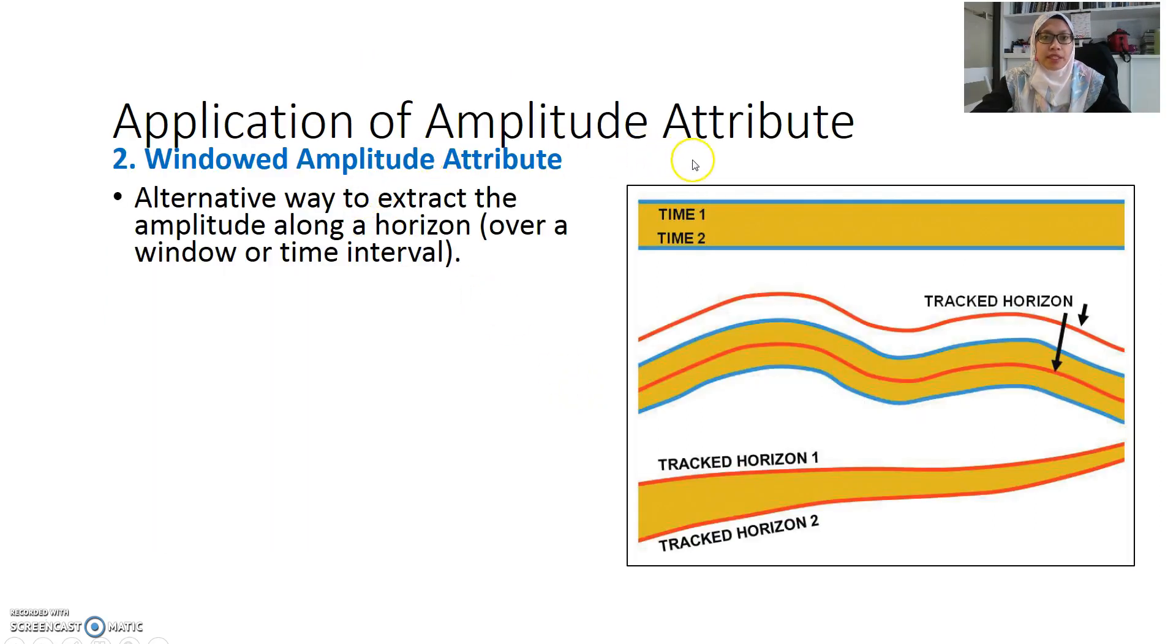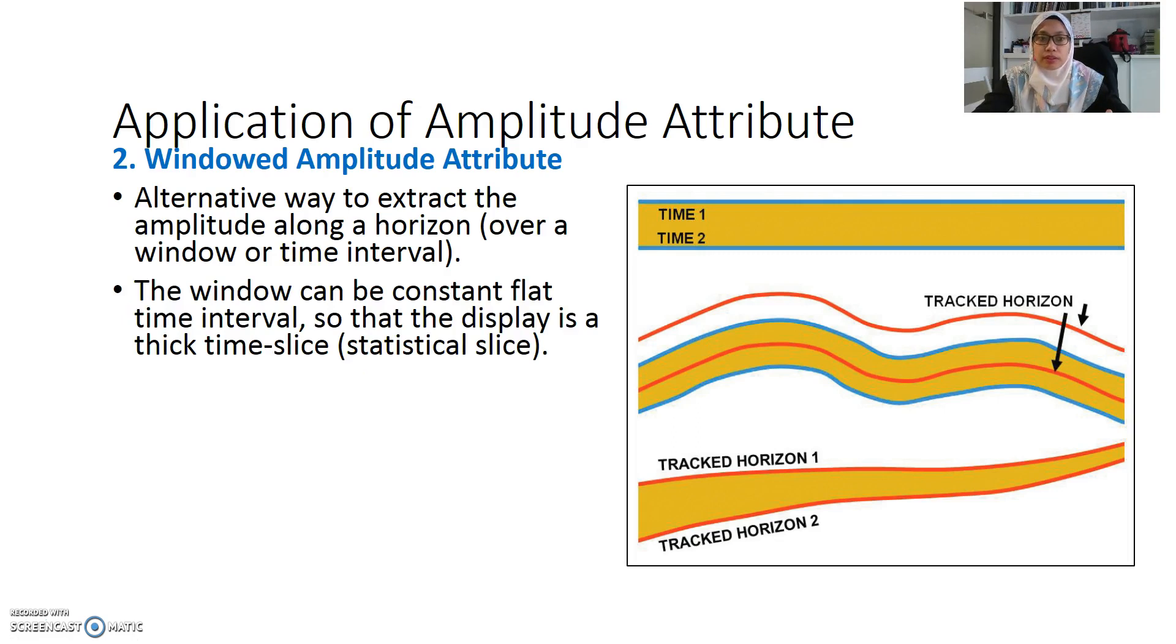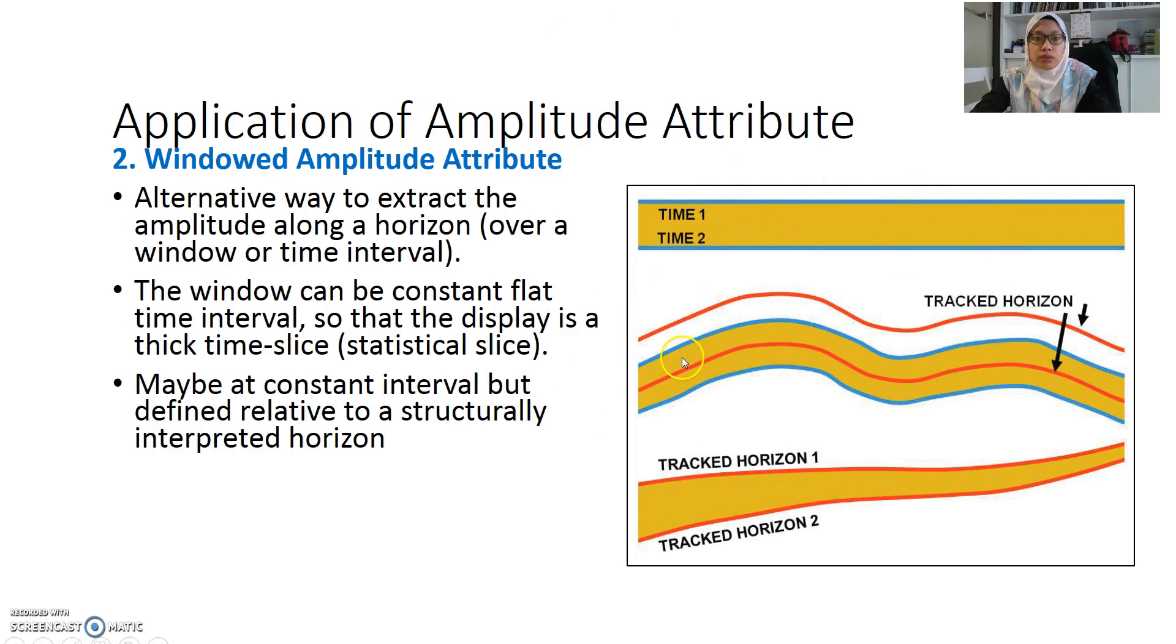Application of amplitude attribute based on window amplitude attributes where you have two times or two tracked horizons. This is an alternative way to extract the amplitude along a horizon over a time window or an interval. The window can be constantly flat, which is this time.